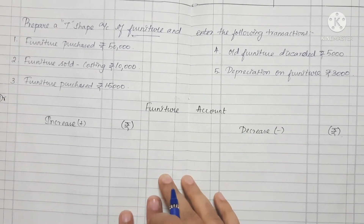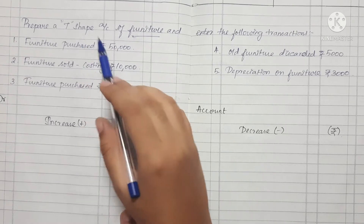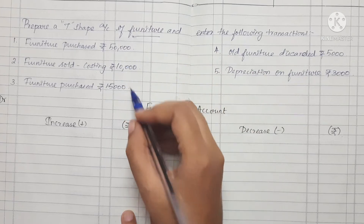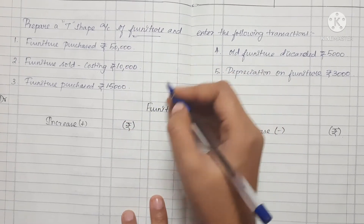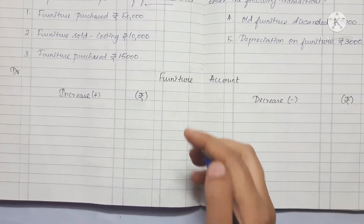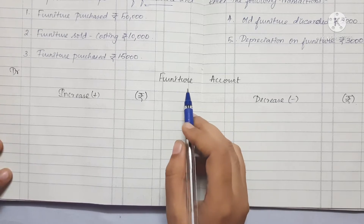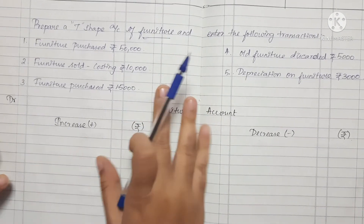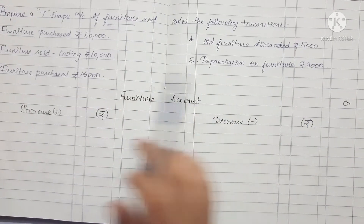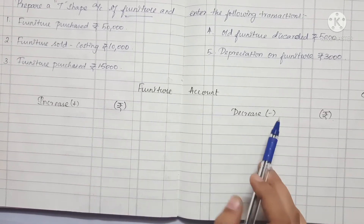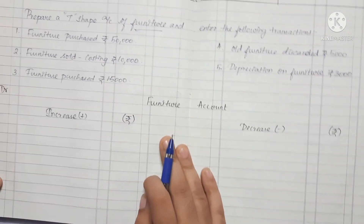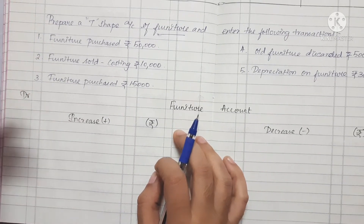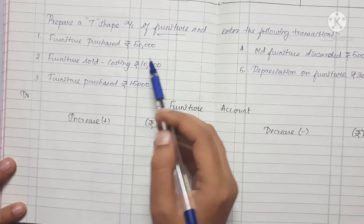Let's see how the sum is done. We need to prepare a T-Shape Account of Furniture and enter the following transactions. Let's look at the format of the Furniture Account. This is the Debit side and Credit side — the Debit side represents Increases and the Credit side represents Decreases.